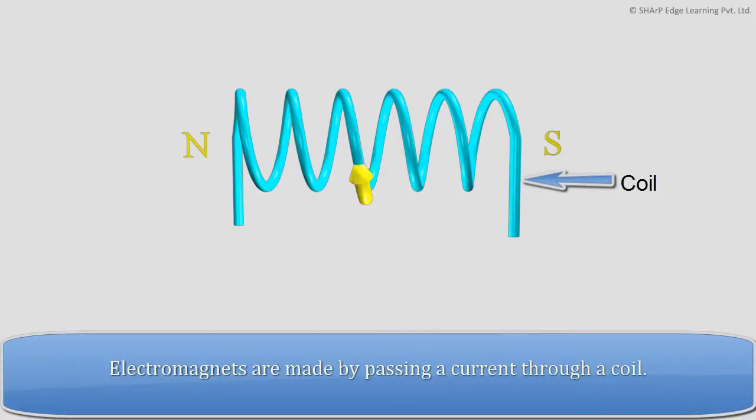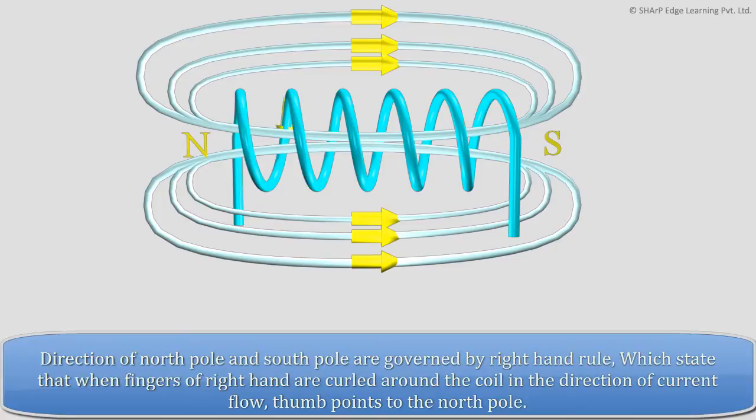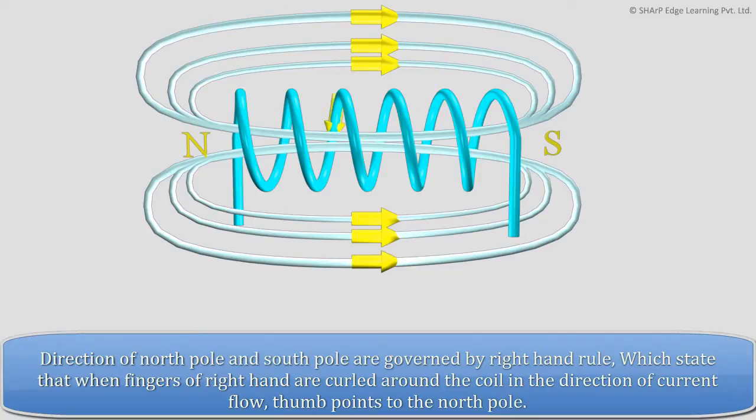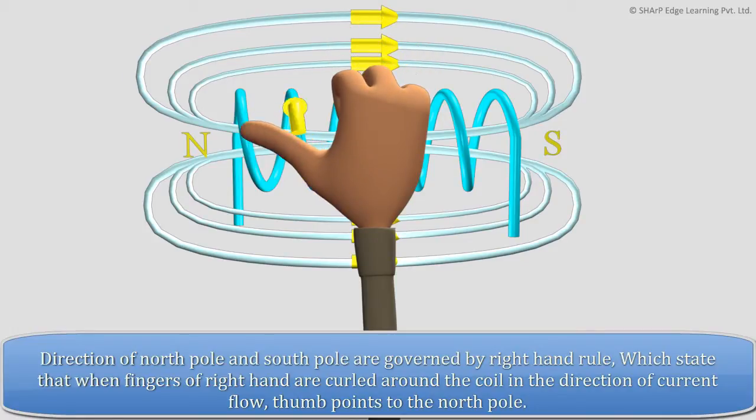Electromagnets are made by passing a current through a coil. Direction of north pole and south pole are governed by right hand rule, which states that when fingers of right hand are curled around the coil in the direction of current flow, thumb points to the north pole.